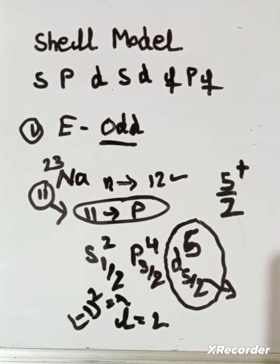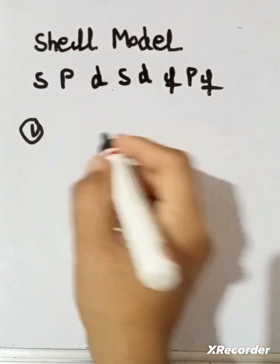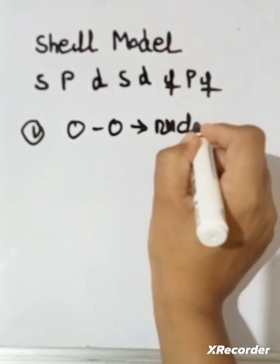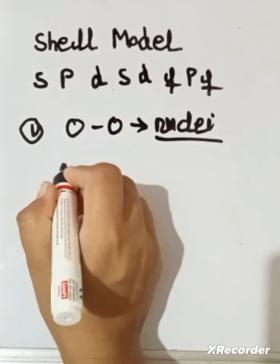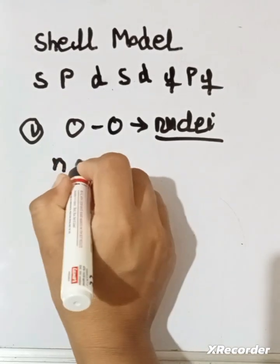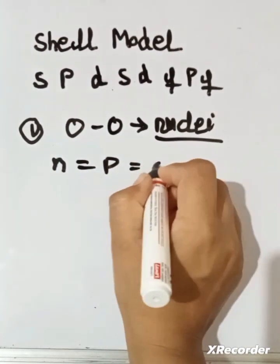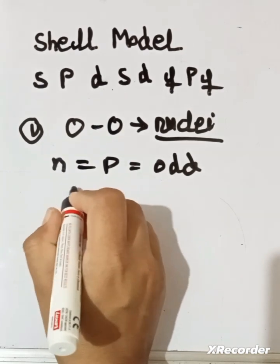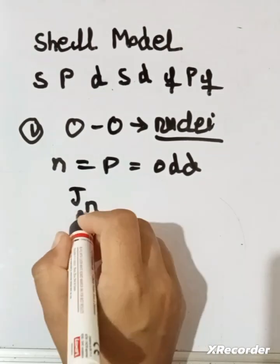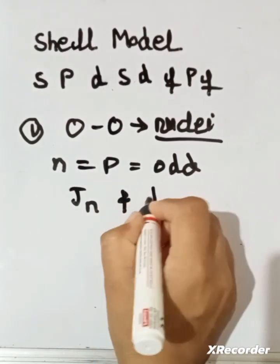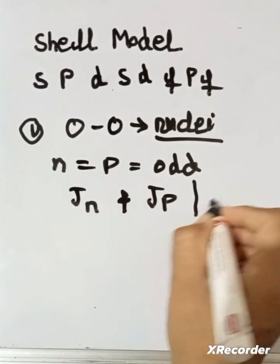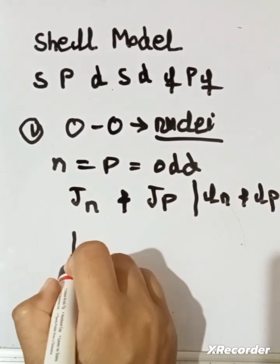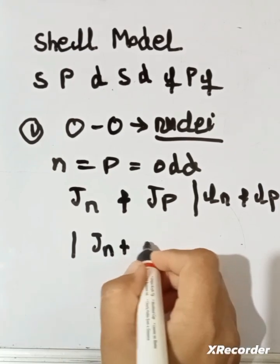Next is the odd-odd case. In odd-odd nuclei, both neutron number and proton number are odd, so both contribute to the spin. We first find j_N (for neutron) and j_P (for proton) using the same shell-filling method, as well as L_N and L_P for their respective levels.